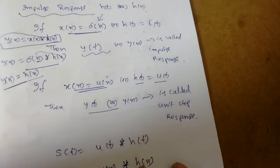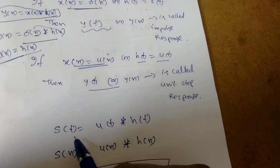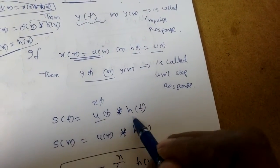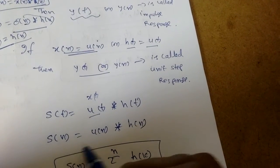Now how to find unit step response? S(t) equals x(t), I am replacing with u(t) convolved with h(t). Or s(n) equals u(n) convolved with h(n).